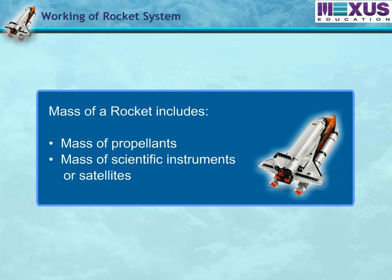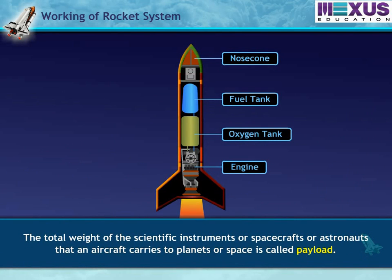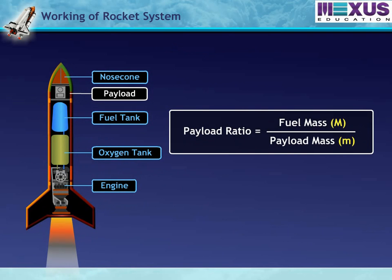The mass of a rocket includes the mass of propellants, scientific instruments, or the satellite in the rocket. The total weight of the scientific instruments, spacecraft, or astronauts that a rocket carries to planets or space is called payload. The ratio of payload mass to fuel mass is called the payload ratio.